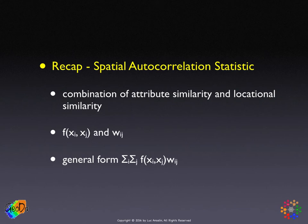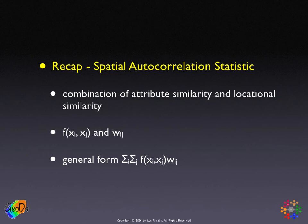Formally, we have two elements. One is a function that relates x at i and x at j, the variable x. The other is the element of the weights matrix corresponding to i and j, w(i,j).